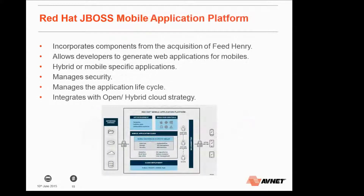The Red Hat JBoss Mobile Application Platform came from the acquisition of FeedHenry a couple of years ago. FeedHenry remains the upstream open source project, so the latest bleeding-edge tech goes into FeedHenry and Red Hat takes that tech, hardens it, stress tests it, makes it enterprise ready and supportable. It allows developers to generate web applications for mobile using form-based menus in an all web-based environment hosted in the cloud, enabling very quick generation and deployment of applications to mobile devices.